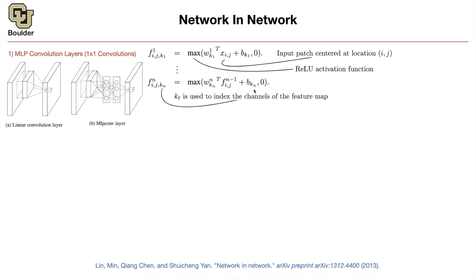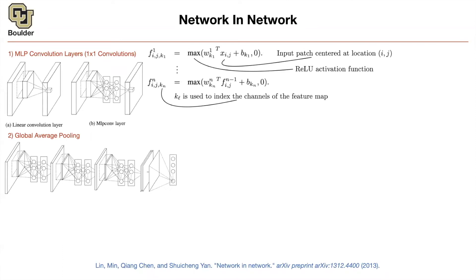What is the other idea? The other idea is global average pooling. So that's their network, a bunch of network in networks. In the end, if you remember, we had fully connected layers in AlexNet. They said those fully connected layers are not necessary.